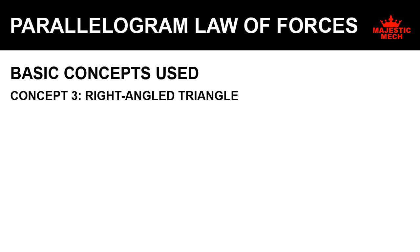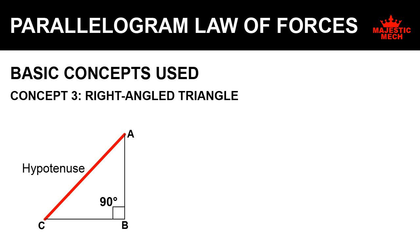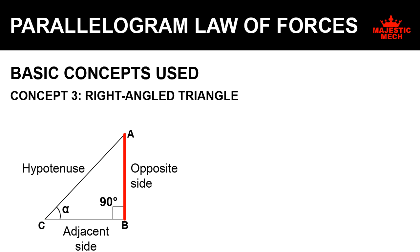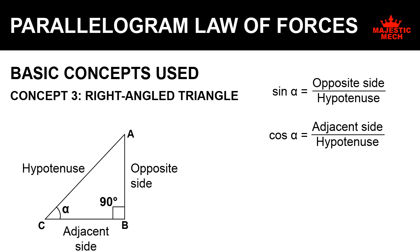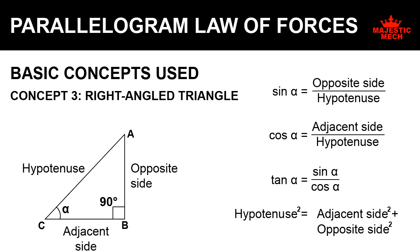The next concept is the right angled triangle. In a right angled triangle, one of the three angles is a right angle, that is 90 degrees. The longest side — the side opposite to the 90 degree angle — is called the hypotenuse. Taking one of the angles, say alpha: the side adjacent to alpha is called the adjacent side and the side opposite to alpha is called the opposite side. Sin alpha equals opposite side divided by hypotenuse. Cos alpha equals adjacent side divided by hypotenuse. Tan alpha equals sin alpha divided by cos alpha. Also, hypotenuse squared equals adjacent side squared plus opposite side squared.